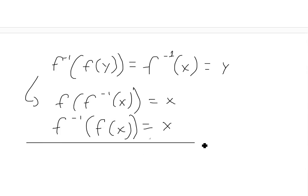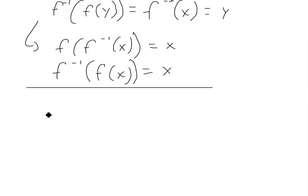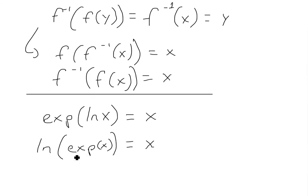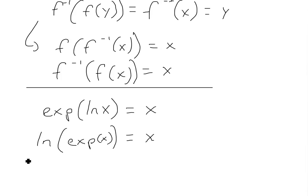For our ln function, we get the following cancellation equations because we defined exp as its inverse. First: exp of ln(x) equals x — putting ln(x) inside the exponent function cancels to give x. Second: ln of exp(x) equals x — putting exp(x) inside ln cancels to give x. So we have two cancellation equations: one where we put ln(x) inside the inverse, and one where we put the inverse inside ln(x).